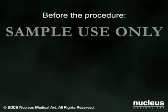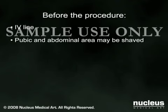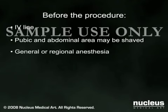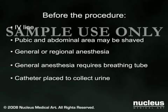When you arrive at the hospital for your surgery, an intravenous line will be started. If you are having an abdominal hysterectomy, your pubic and abdominal area may be shaved. Hysterectomies may be done under general or regional anesthesia. If you are receiving general anesthesia, you will be asleep for the duration of the procedure and a breathing tube will be temporarily inserted through your mouth and into your throat to help you breathe during the operation. A catheter will be placed into your bladder to drain your urine during surgery.